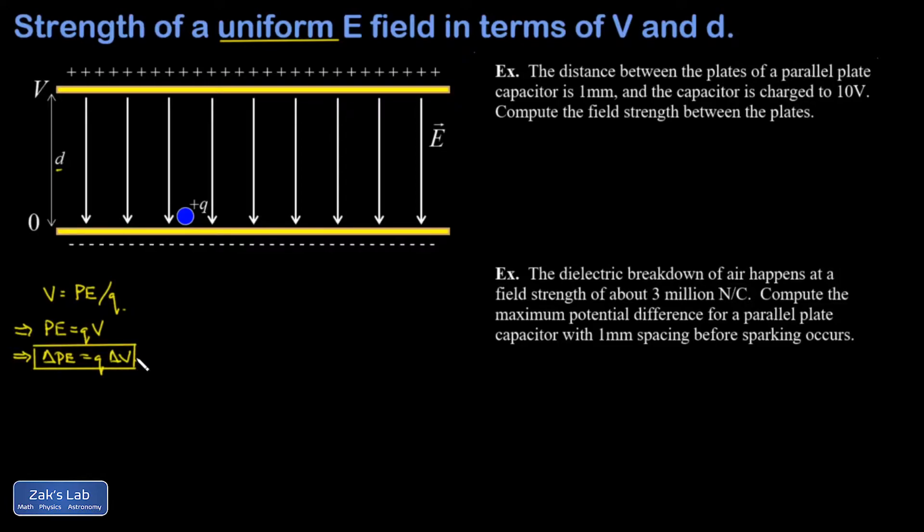To get a handle on this electric field magnitude, we're going to compute the work done by the electric field as we move this charge from the bottom plate to the top plate. You can imagine we're pushing the charge along to counter the electric force, but what we care about is the work done by the electric force, which points downward with magnitude QE. We move the charge from its initial position up to the final position at the positive plate, a distance D away.